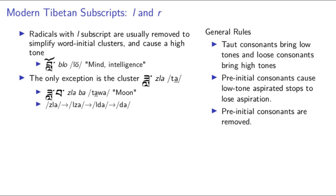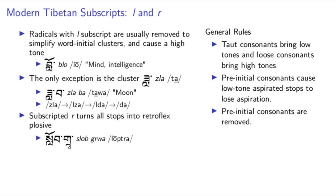So there's only one subscript left: ra. When applied to a stop, it just turns that stop into a retroflex stop — tra. The Old Tibetan retroflex ra articulation, for example ga, sounds a lot like the same motion with the point of articulation where the tongue is curled up — gra, tra. Through time, the point of articulation changed and they all just morphed into retroflex plosives, which did not exist in Old Tibetan. So now we can finally pronounce the second syllable in the word for school: lop-tra.